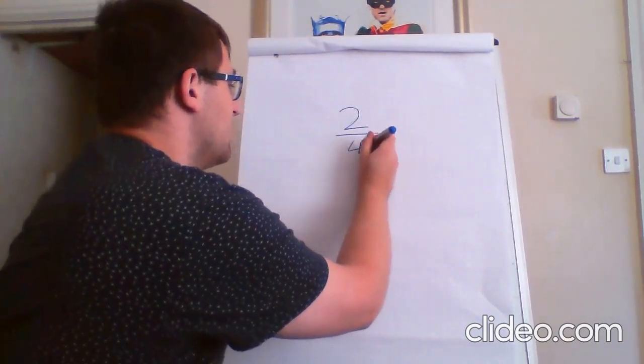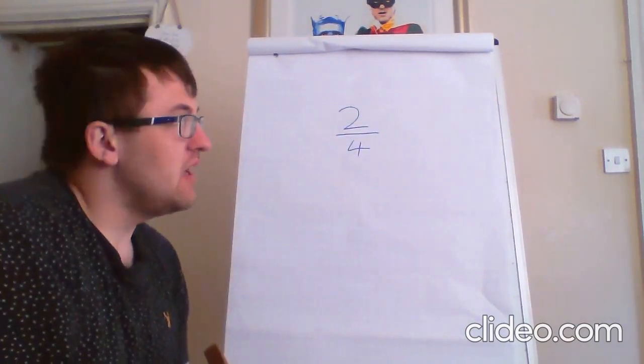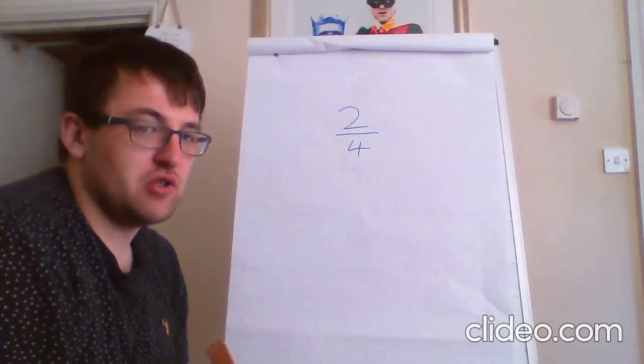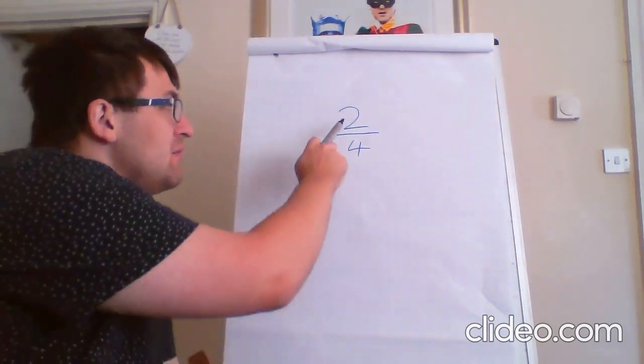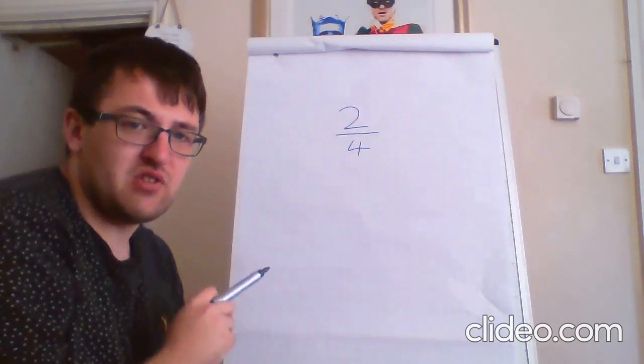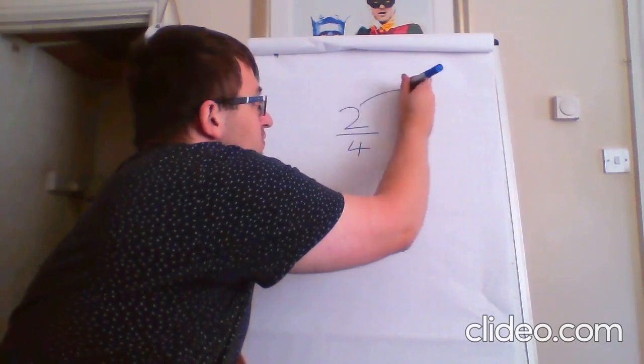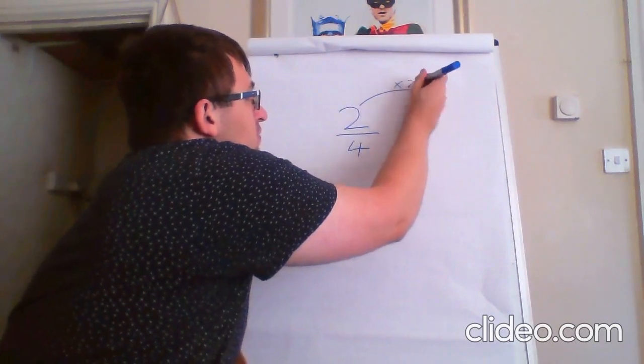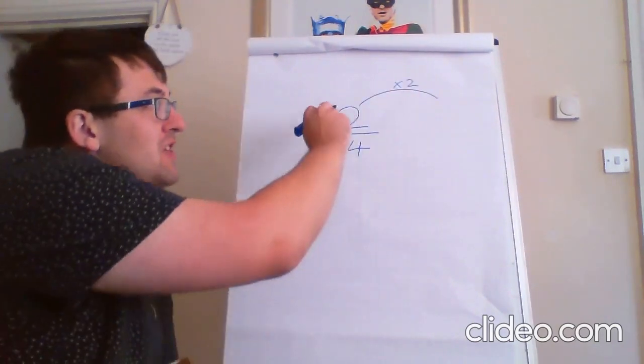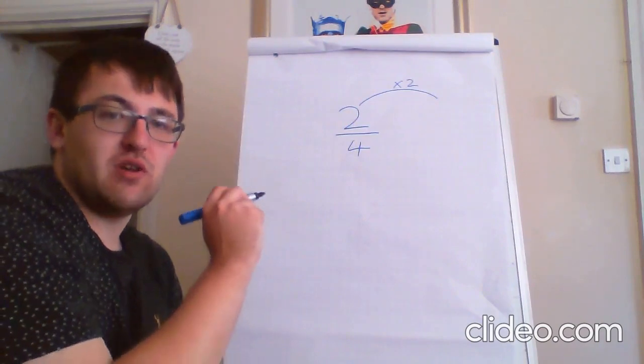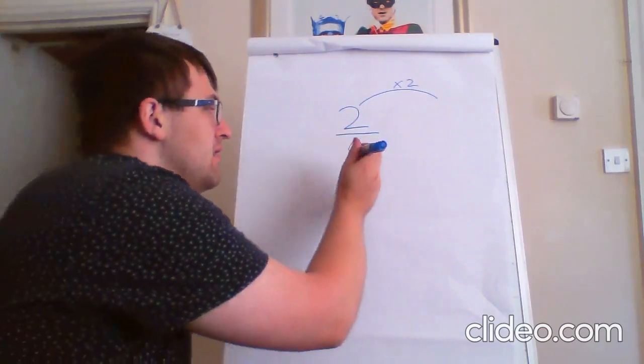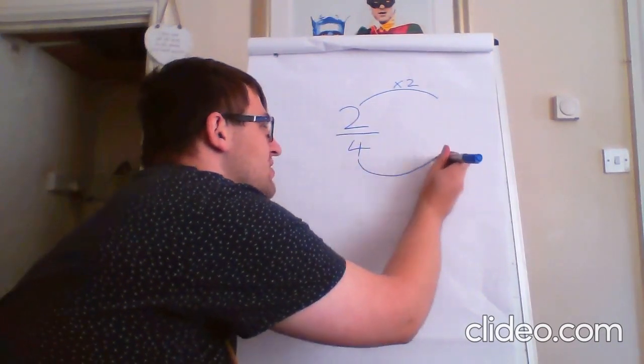Two quarters. Now, if we want to find an equivalent fraction, we have to times the numerator by a certain amount. So, let's say we're going to times it by two. And whatever we've times the numerator by, we also have to times the denominator by. So, we're going to times the four by two.